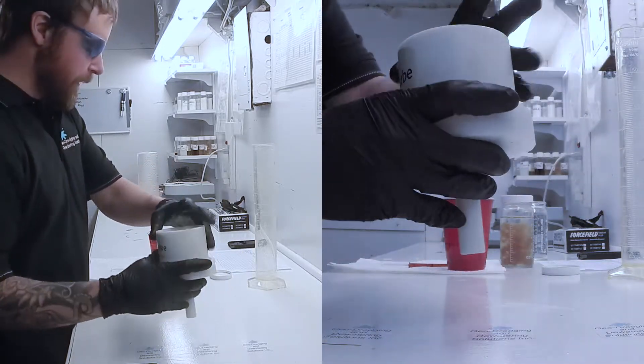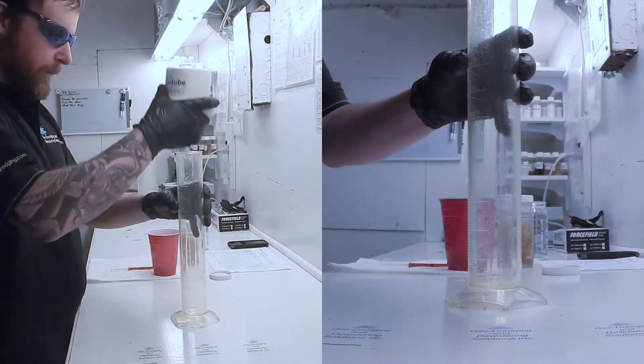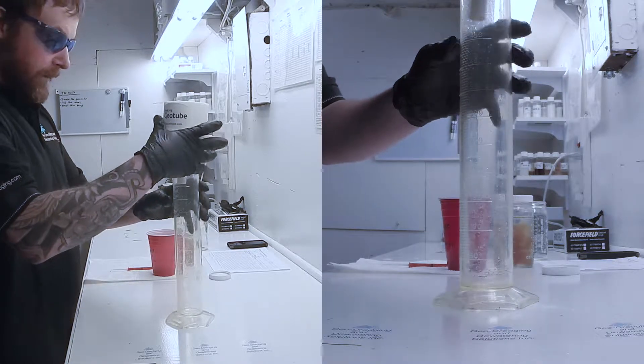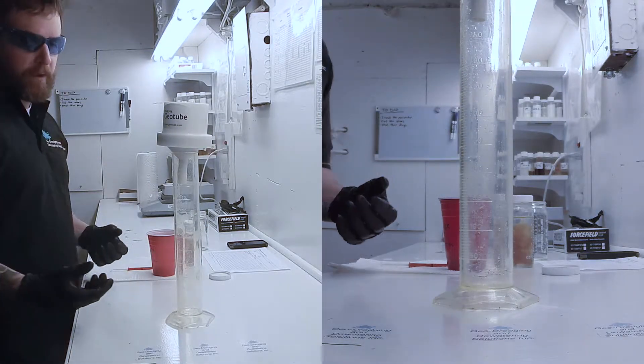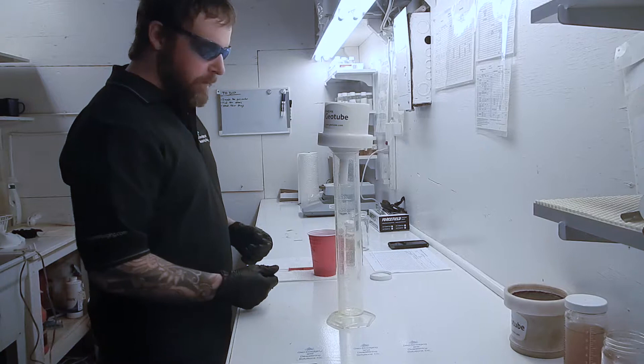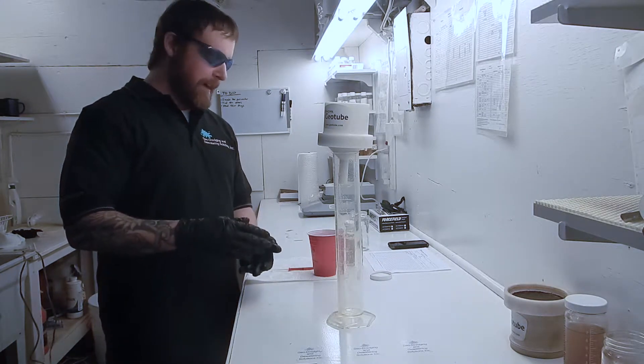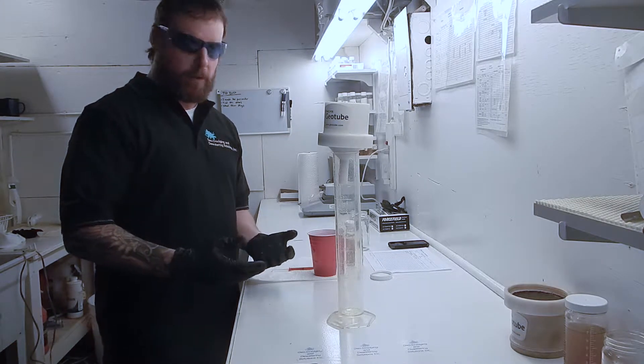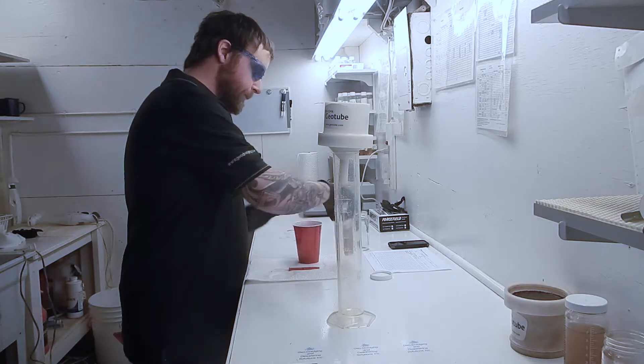We then place the RDT on top of a graduated cylinder and using some type of timepiece, in this case a cell phone, we'll time out a minute and see how much effluent is collected from the dewatering test. Here we go.